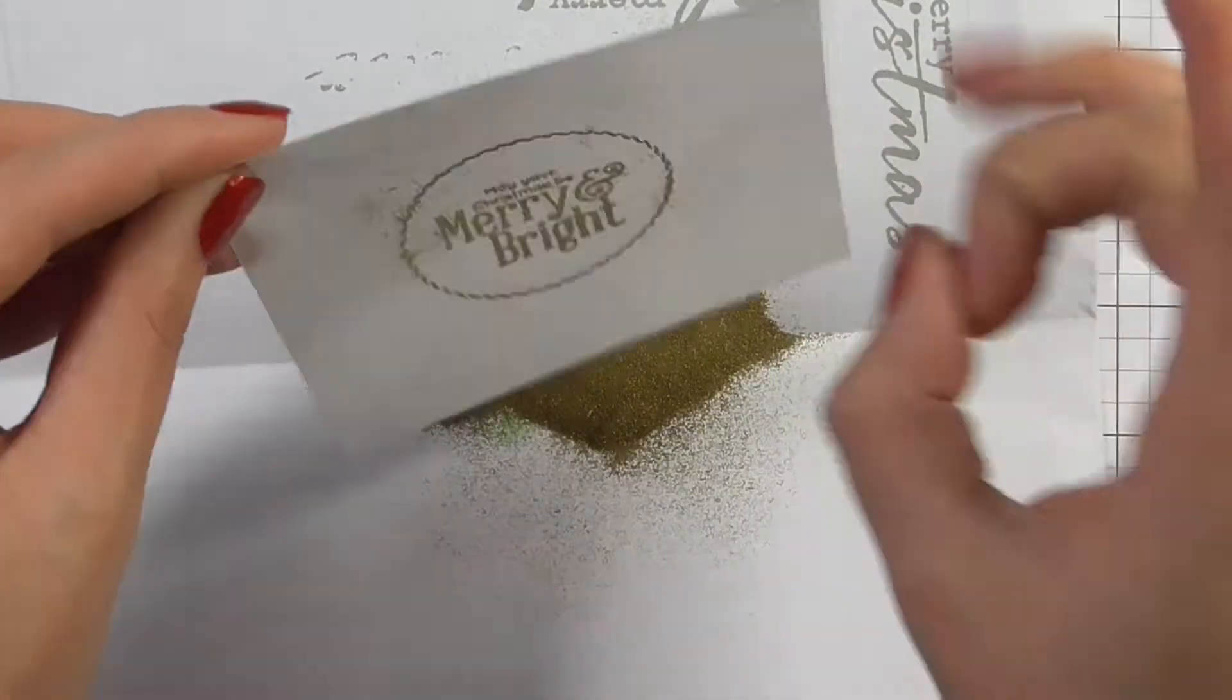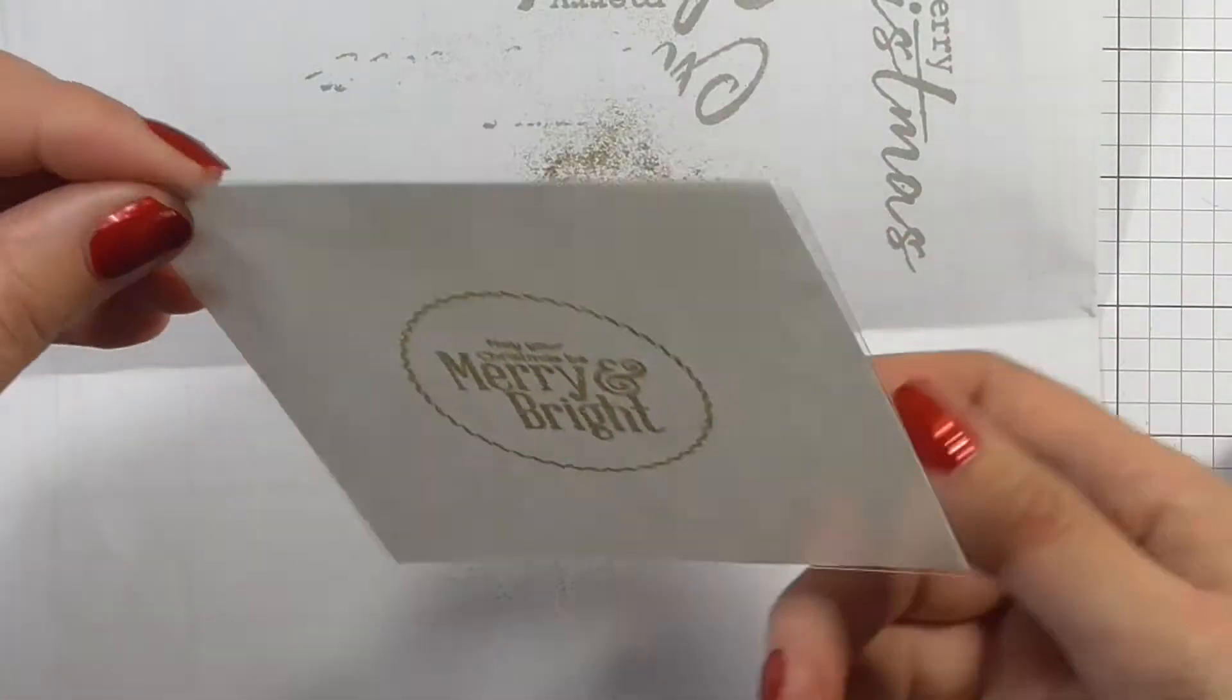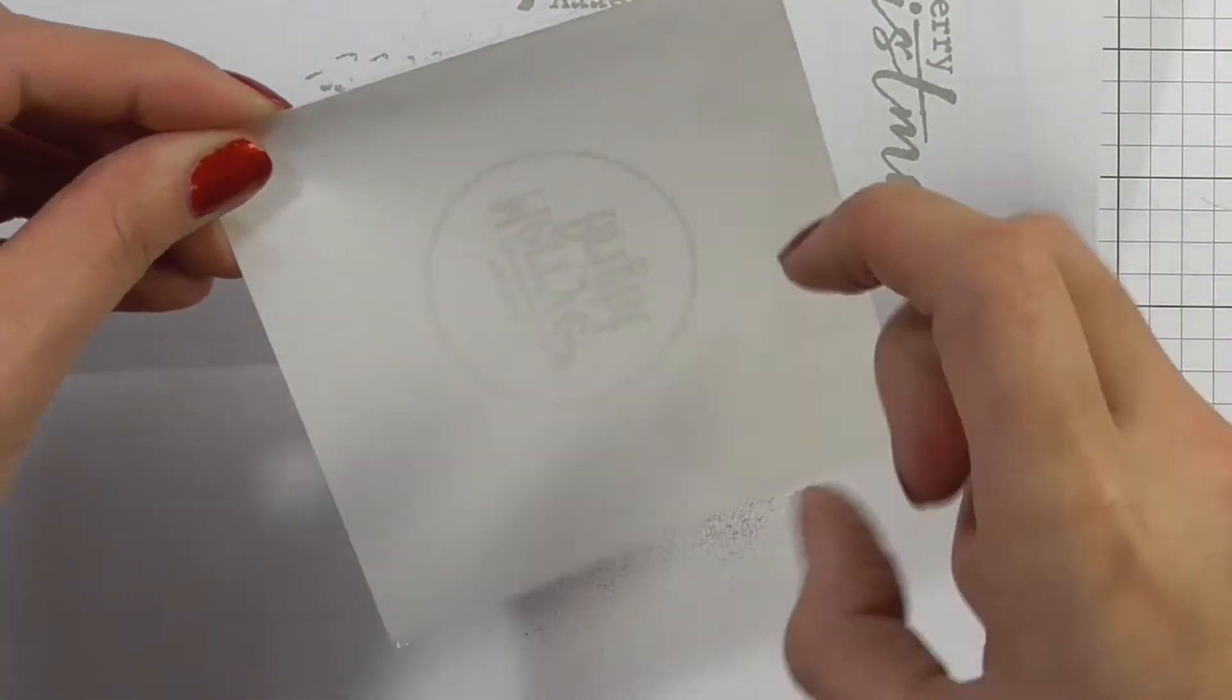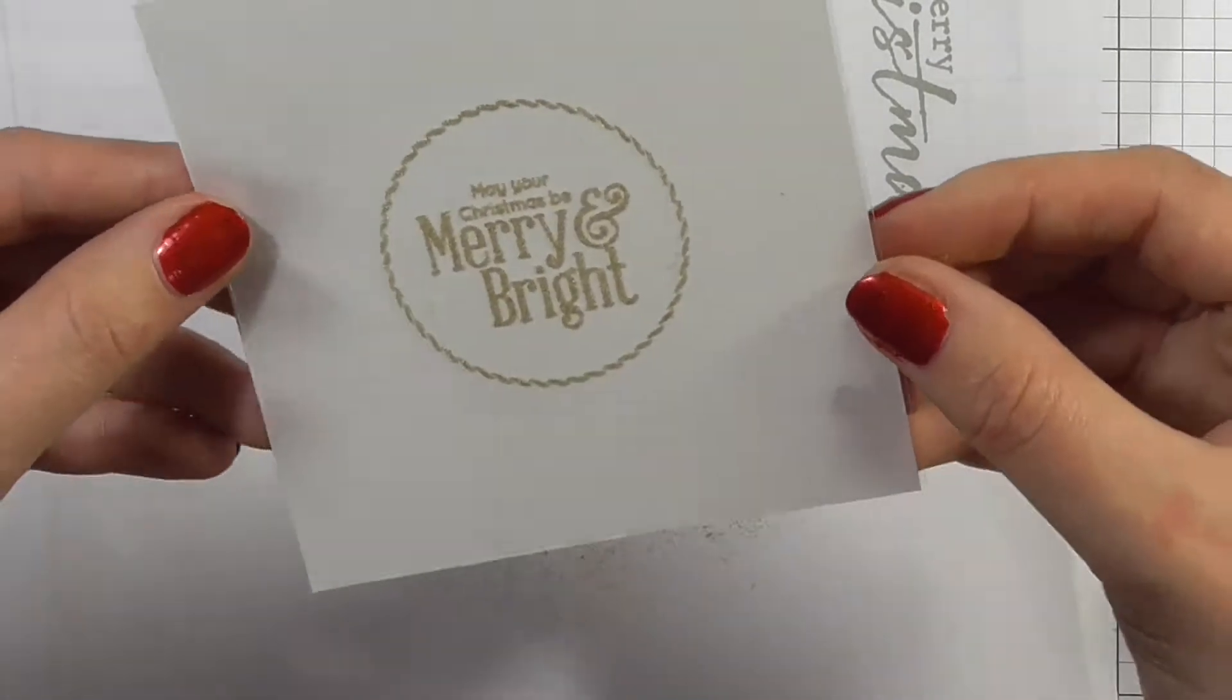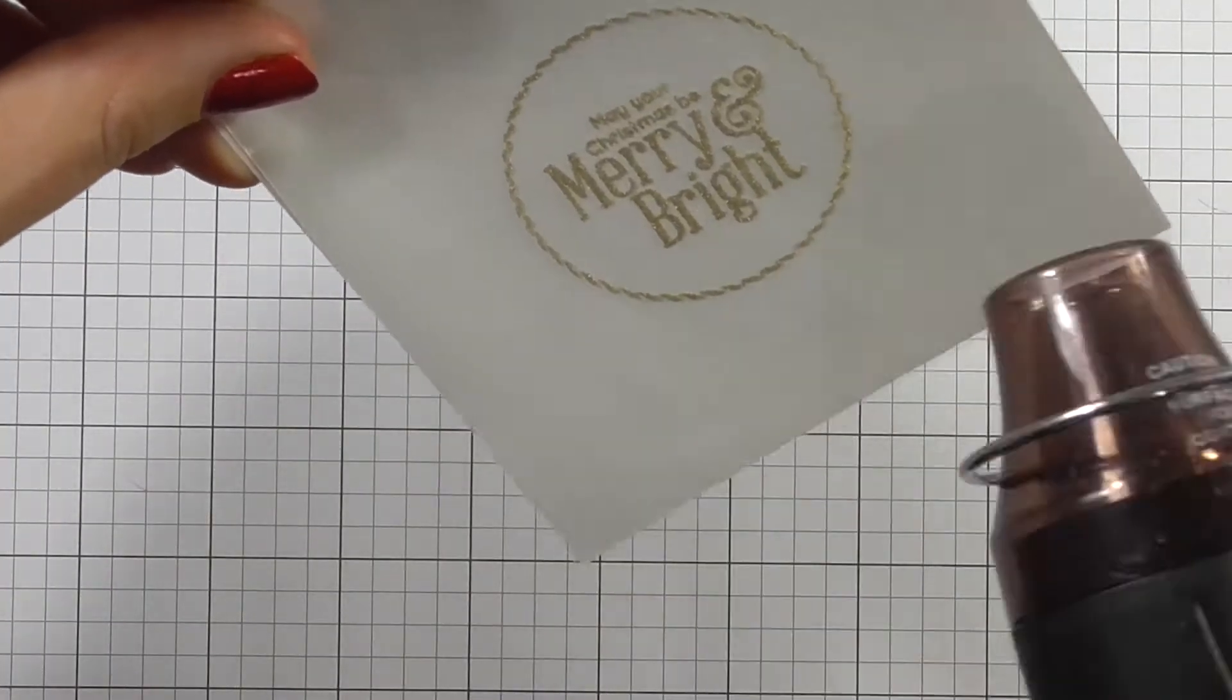So I also didn't use any anti-static embossing powder, and so I'm just going to go ahead and flick this really hard and all of this stray embossing powder does come off really easily.